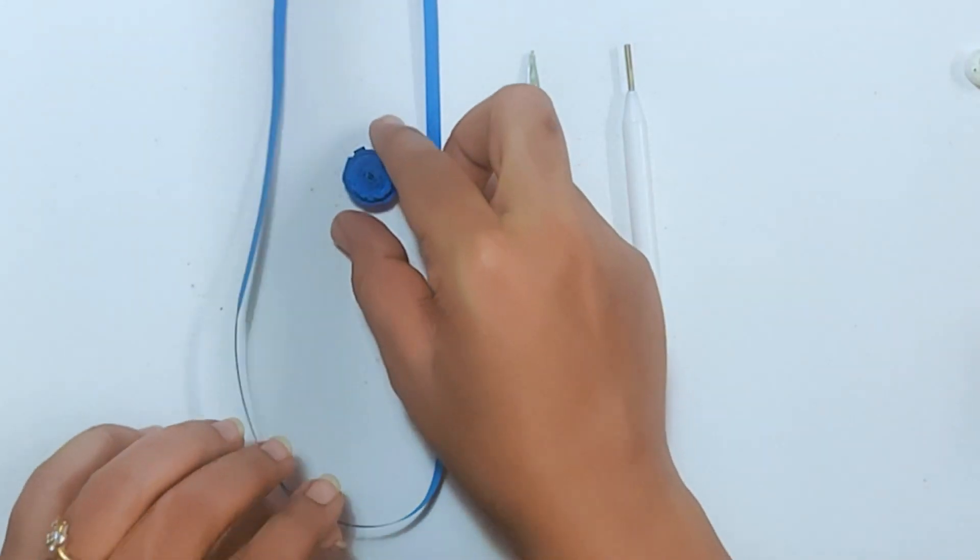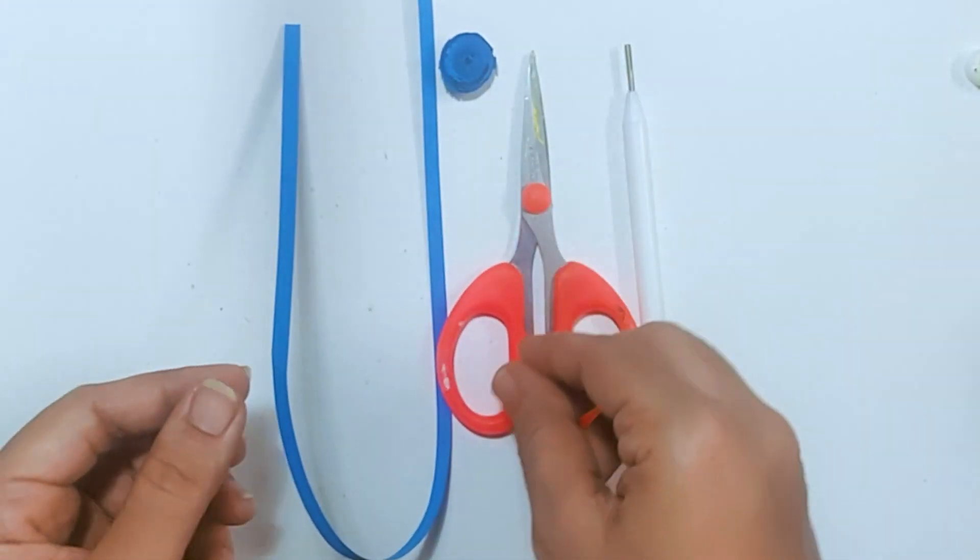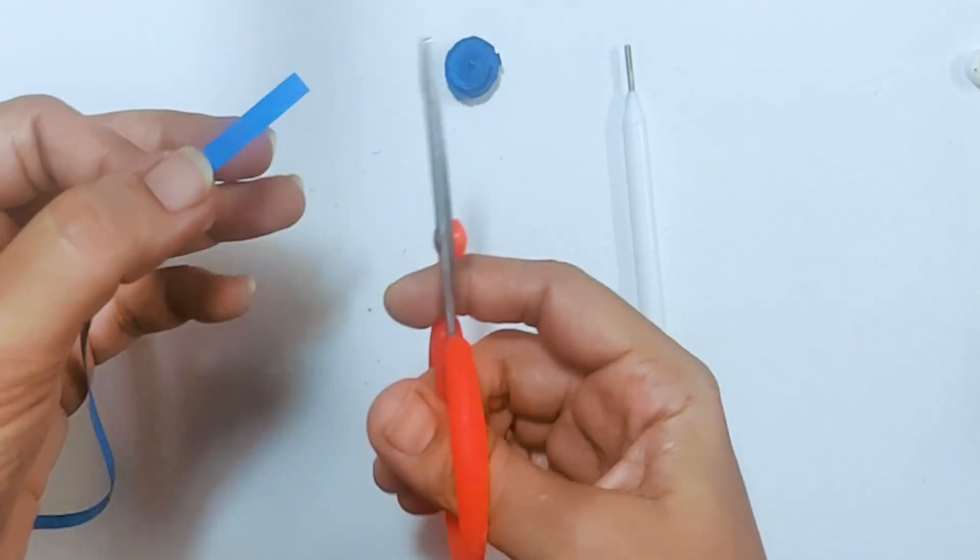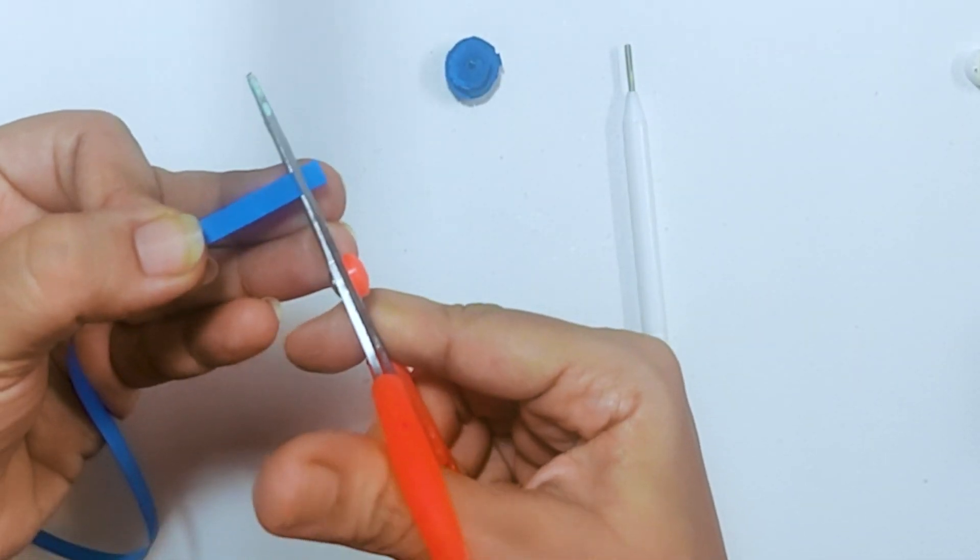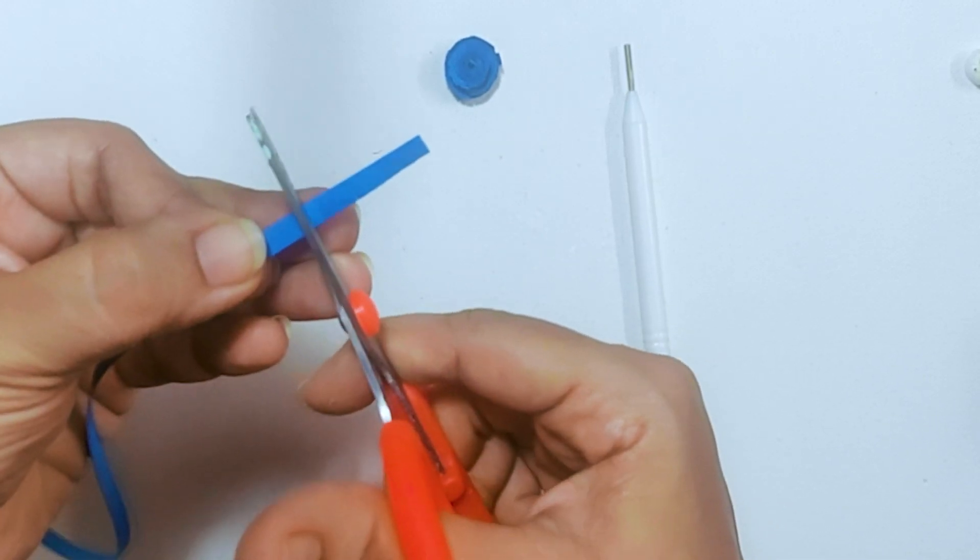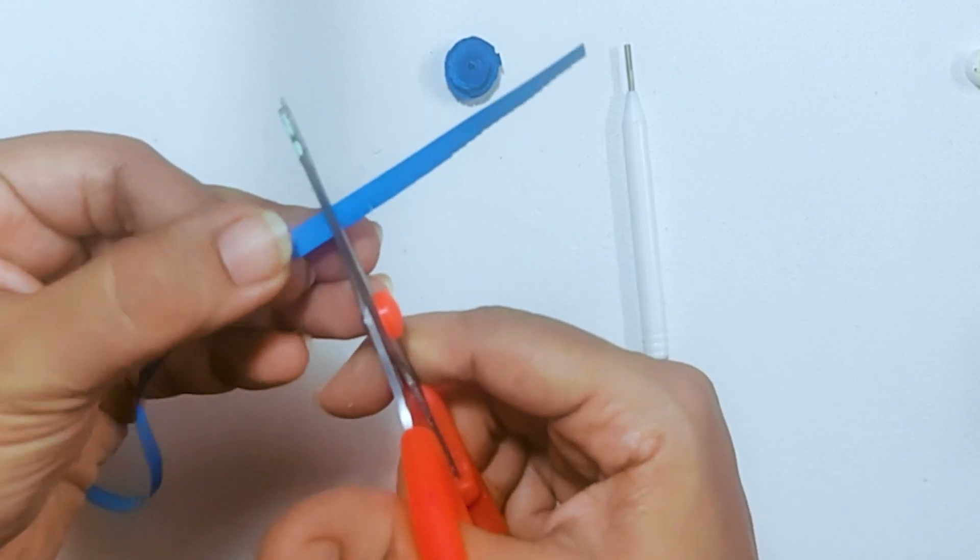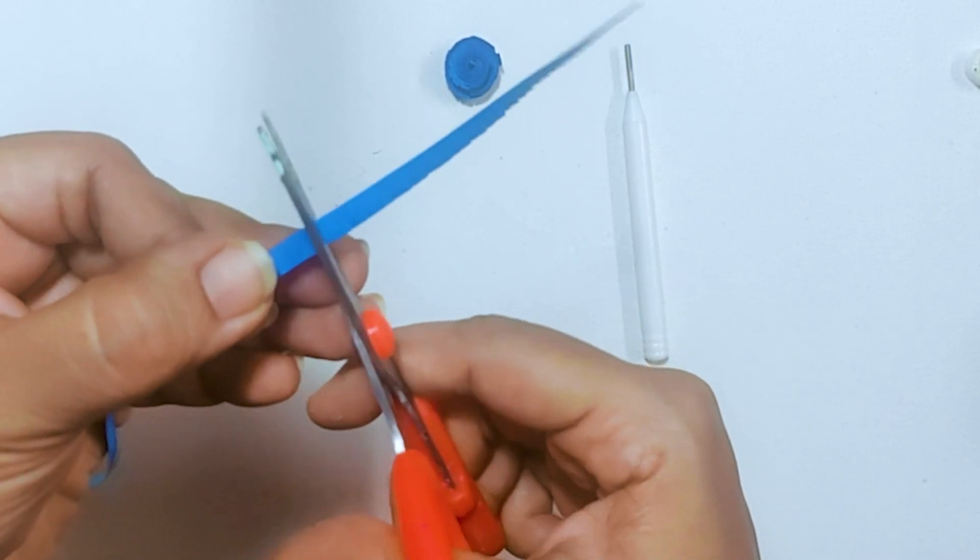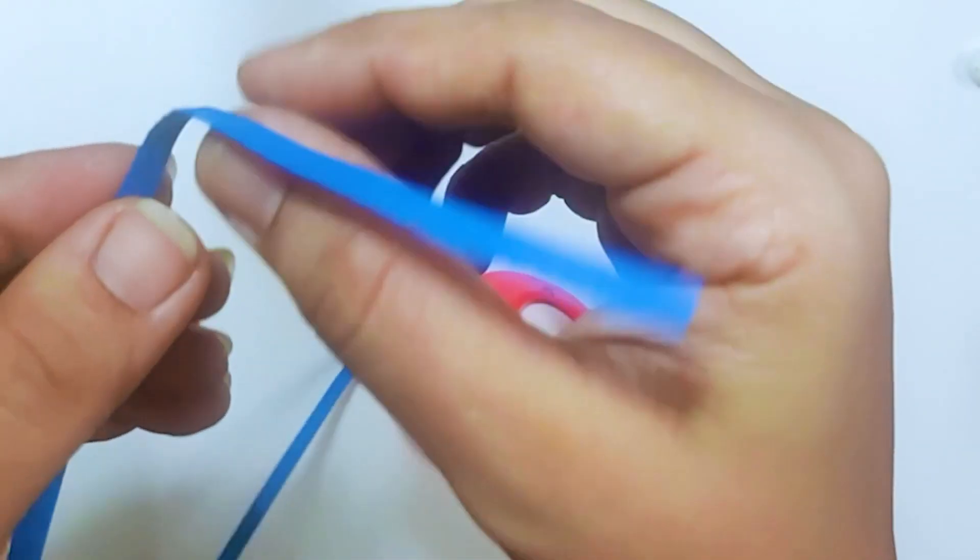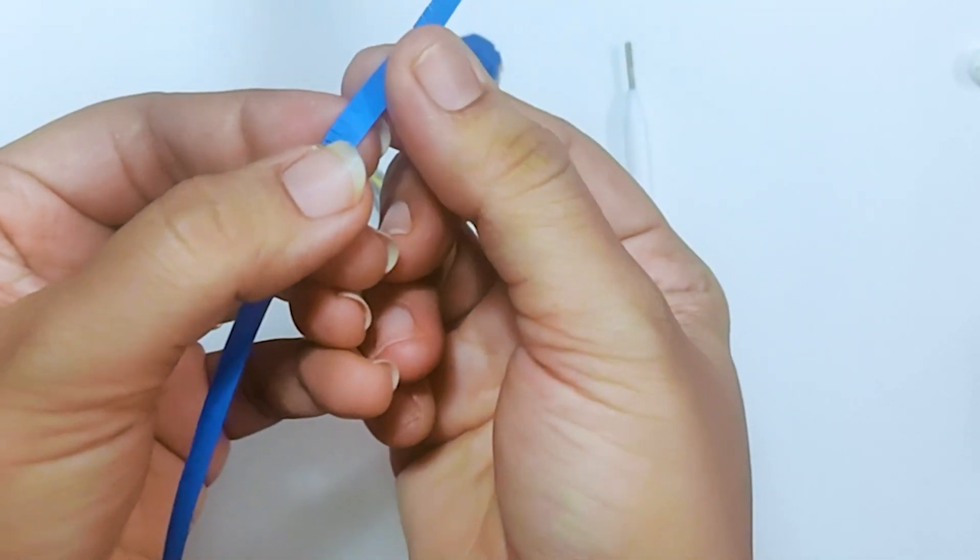Now let's make the chakra, that is the center piece. For the same, we need a blue quilling strip. Take the pair of scissors and cut the quilling strip in this fashion. Cut two or more strips, as you need the chakra to be a little bigger. You should be cutting it like this, just half.